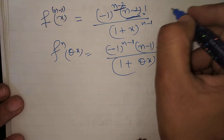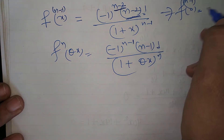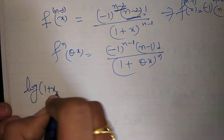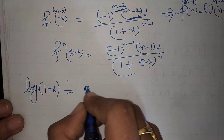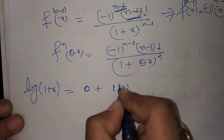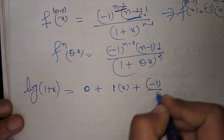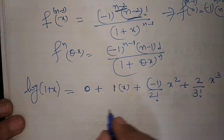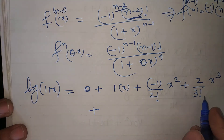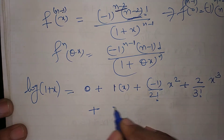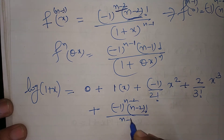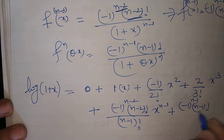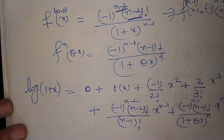So f^(n-1)(0) = (-1)^(n-2) · (n-2)!. Now putting all values: log(1+x) = 0 + 1·x + (-1)/2! · x² + 2/3! · x³ + ... + [(-1)^(n-2)(n-2)!/(n-1)!] x^(n-1) + [(-1)^(n-1)(n-1)!/n! · 1/(1+θx)^n] · x^n. Simplifying: log(1+x) = x - x²/2 + x³/3 + ... + (-1)^(n-2) x^(n-1)/(n-1) + (-1)^(n-1) x^n / [n(1+θx)^n].